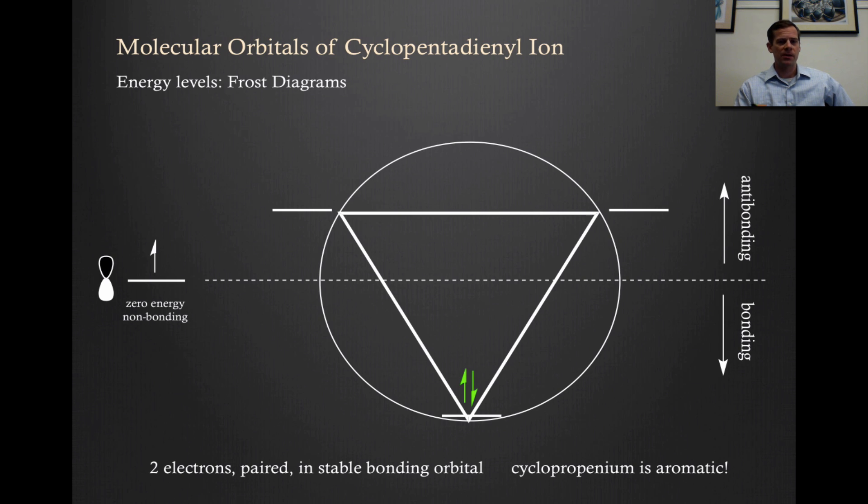Here's the frost diagram of cyclopropenium. This is the simplest one. With a circle, we put an equilateral triangle in there, and then at each vertices, a molecular orbital. In this case, we only have two pi electrons to put in, so they both get to go into that most stable, most symmetrical orbital. That's a very stable orbit. That's completely bonding around all atoms. Two electrons, they're fully paired in a stable bonding orbital and cyclopropenium is aromatic.